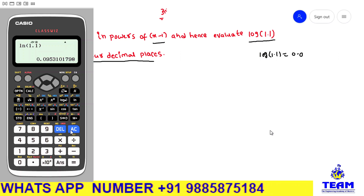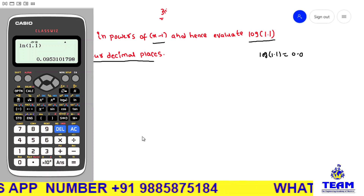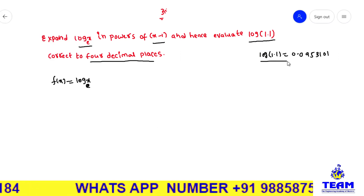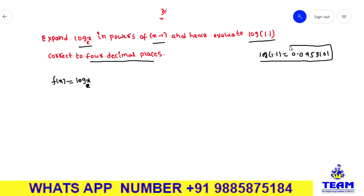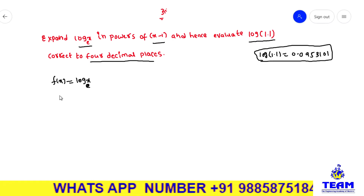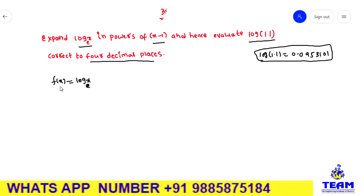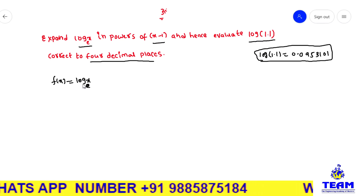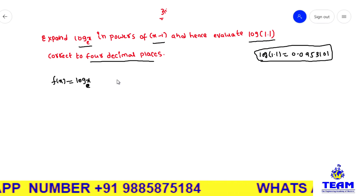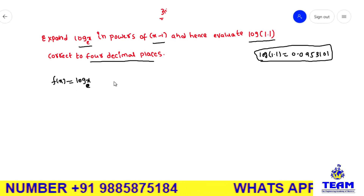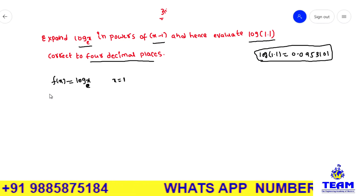I am writing the log(1.1) value to one side — this is the log(1.1) reference value. Now coming to the solution: given function f(x) = log(x), we have to expand in powers of (x minus 1), that is about x = 1.